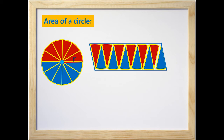If we divide the circle into more sectors, then the figure will take the shape of a rectangle. Thus, we see that the area of the circle will be given by the area of the rectangle.